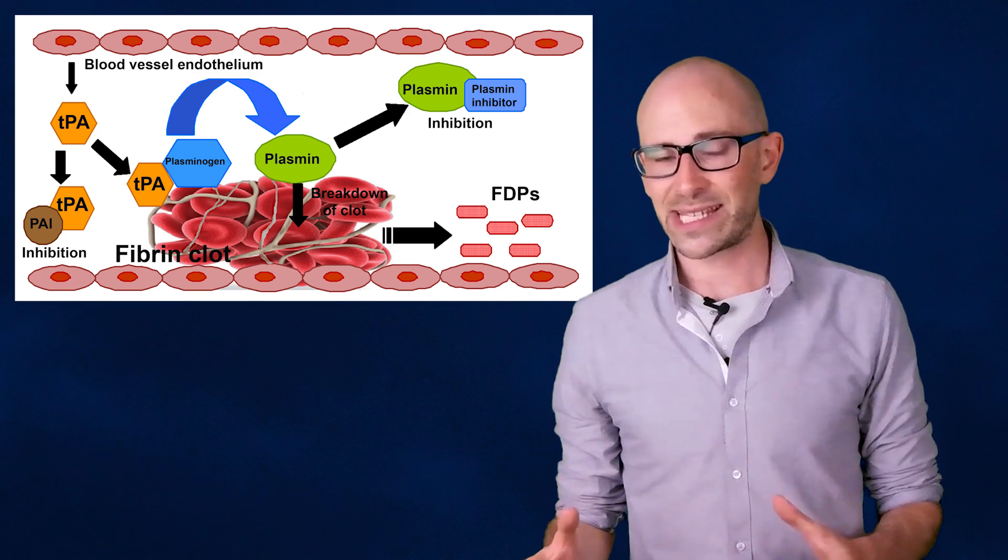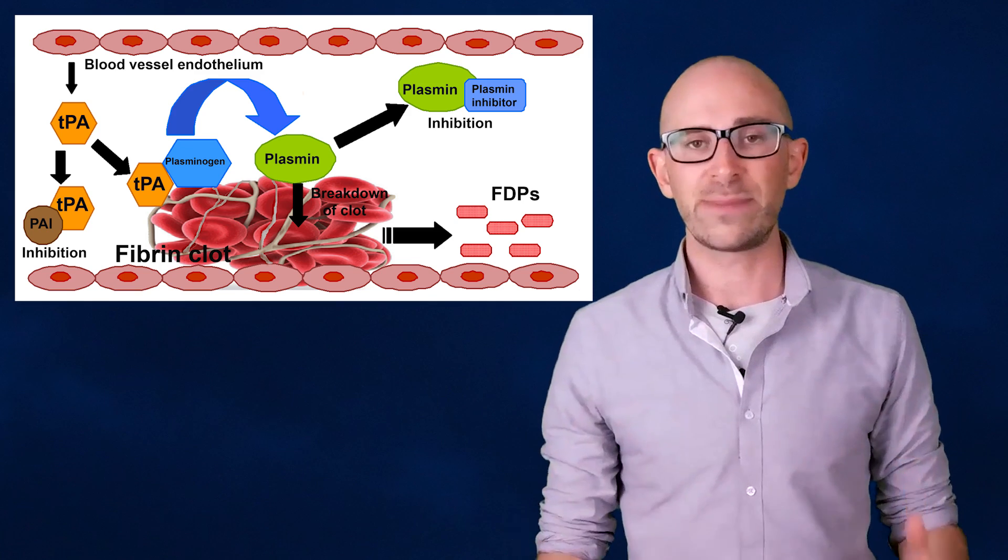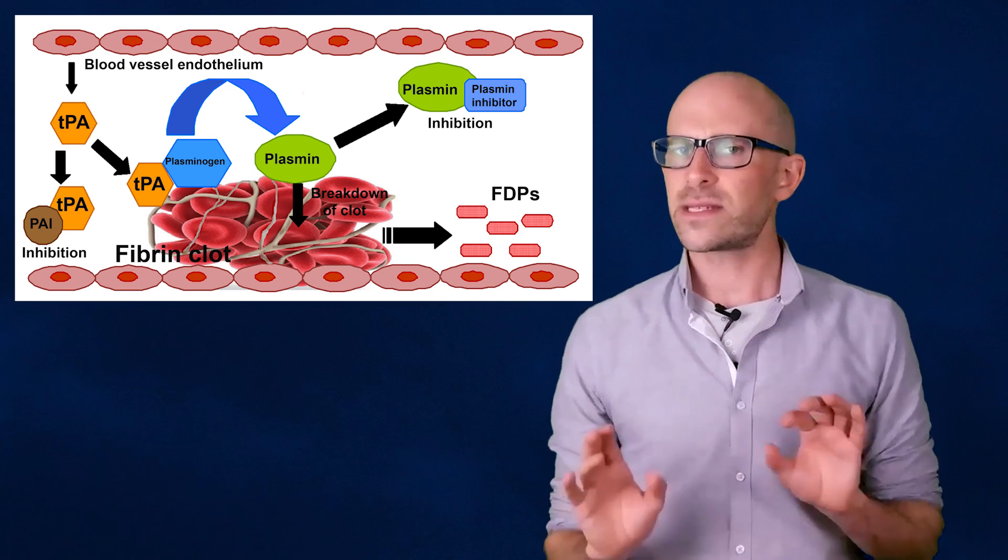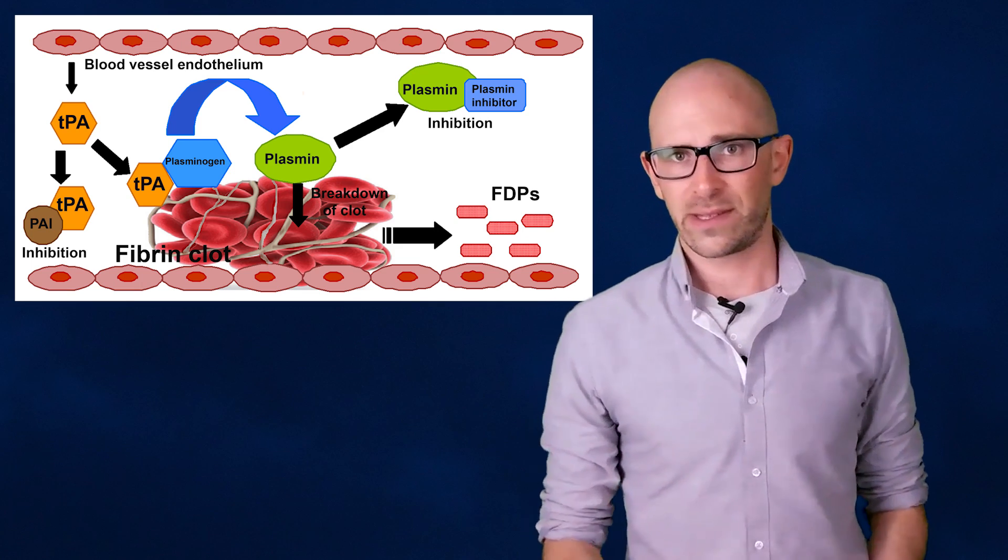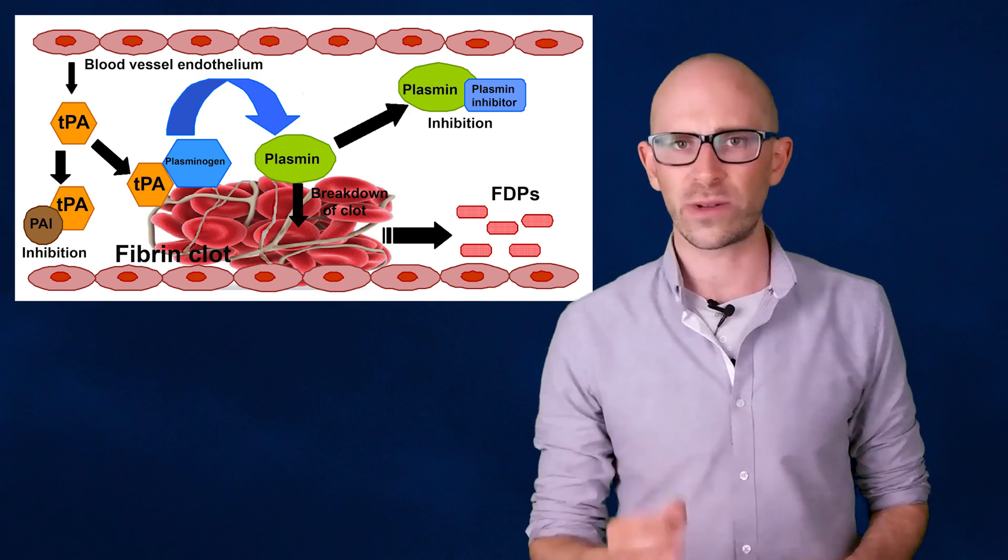The first is to use thrombolytics, clot dissolving drugs like Activase. Using a protein called tissue plasminogen activator, this type of drug breaks down clots, allowing blood to begin flowing again. Using this drug has its own problems. The first is that they require administration within three hours of the onset of symptoms, although some studies have suggested that doctors can give the drug under certain circumstances within six hours.